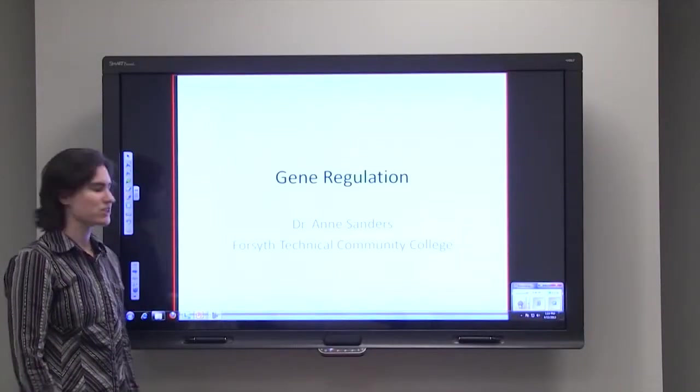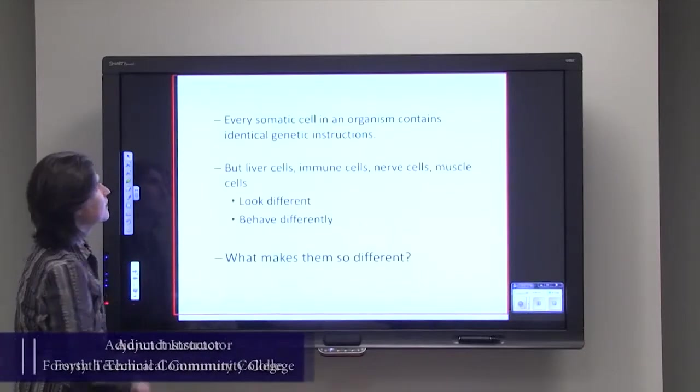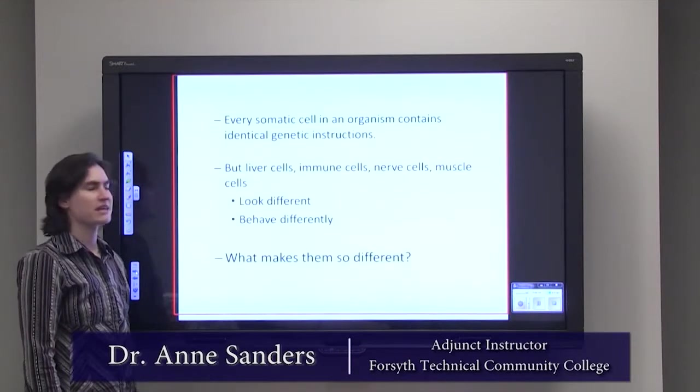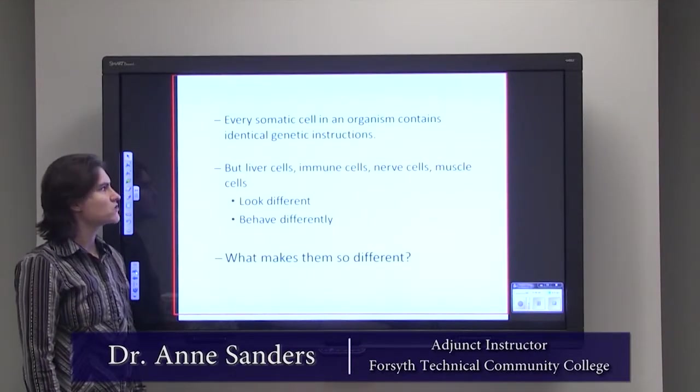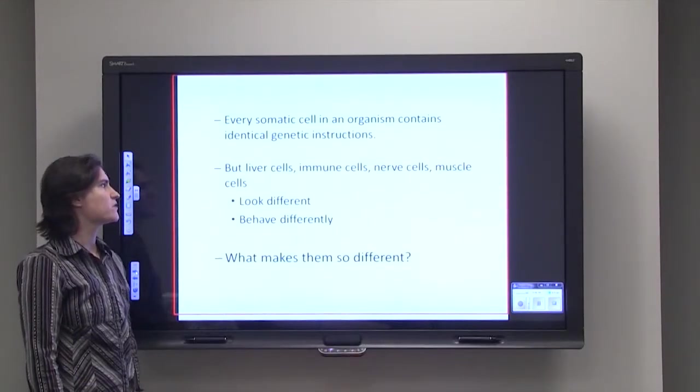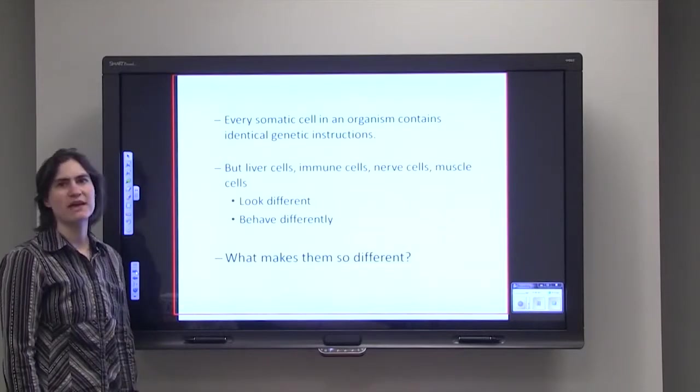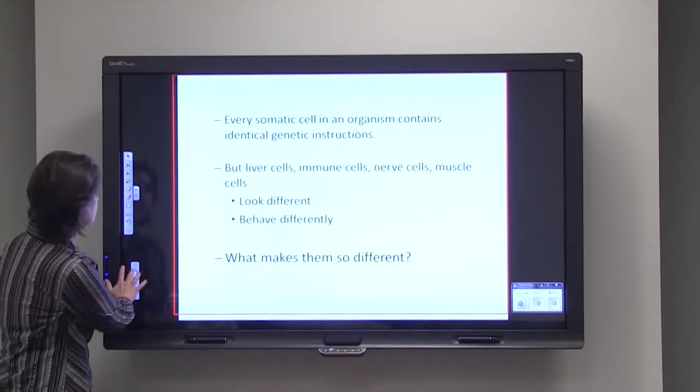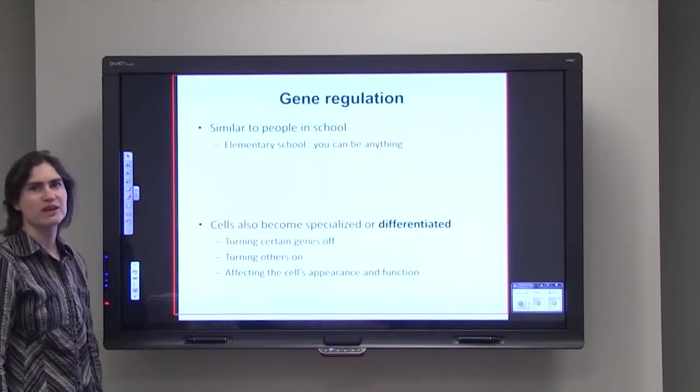Today's topic is gene regulation. Every somatic cell in an organism contains identical genetic instructions, but liver cells, immune cells, nerve cells, and muscle cells all look and behave quite differently. So what makes them so different? The answer is gene regulation.